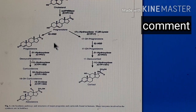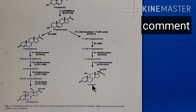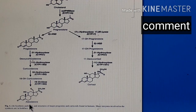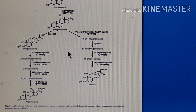At the end of these metabolic reactions, cholesterol forms aldosterone and cortisol. Cortisol is a glucocorticoid while aldosterone is a mineralocorticoid. Different enzymes belonging to the cytochrome P450 system are involved at various steps.